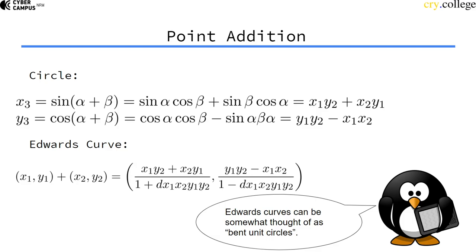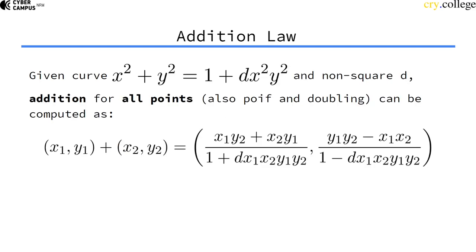But we have a divisor. As I said before, you can think of Edwards Curves as somewhat bent unit circles. We have this curve equation of the Edwards Curves. If d is a non-square, which is a requirement for us, then addition for all points can be computed with this formula.